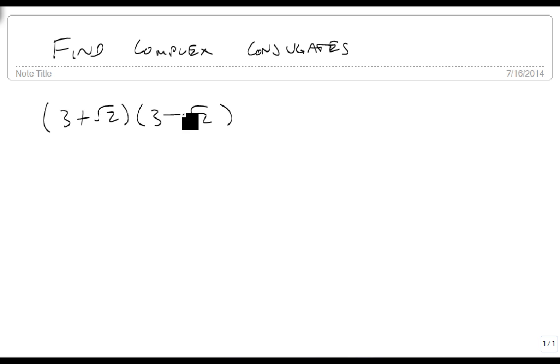And we do this for much the same reason. Remember that this gives us 3 squared minus the square root of 2 squared, which is 9 minus 2, which is 7.